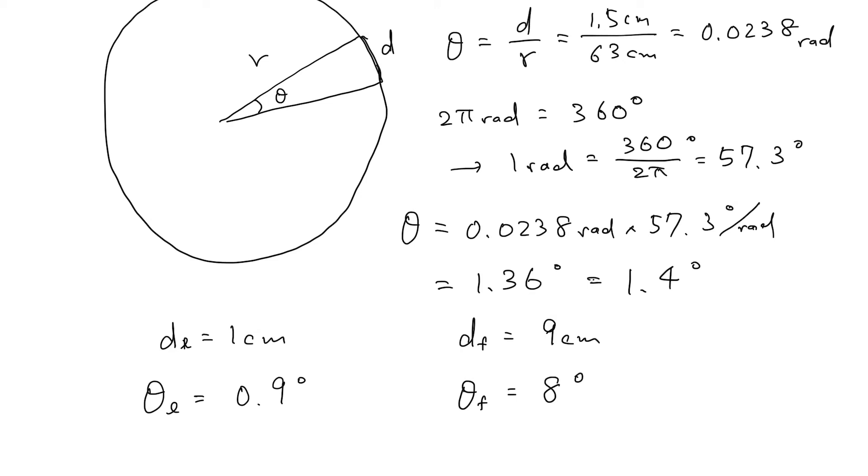This is how to calculate angular size. The angular size of your thumb nail is 1.4 degrees, the angular size of your little finger nail is 0.9 degrees, and the angular size of your fist is 8 degrees.